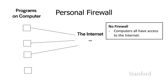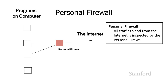Let's take a look at the situation with no firewall. With no firewall, all of your programs just communicate directly with the internet, and the internet communicates directly with your programs. What the personal firewall does is — typically part of the operating system — it acts as an intermediary where all traffic from programs on your computer needs to go through the personal firewall. The personal firewall will either say you're authorized to send this information out, or it will block the traffic.